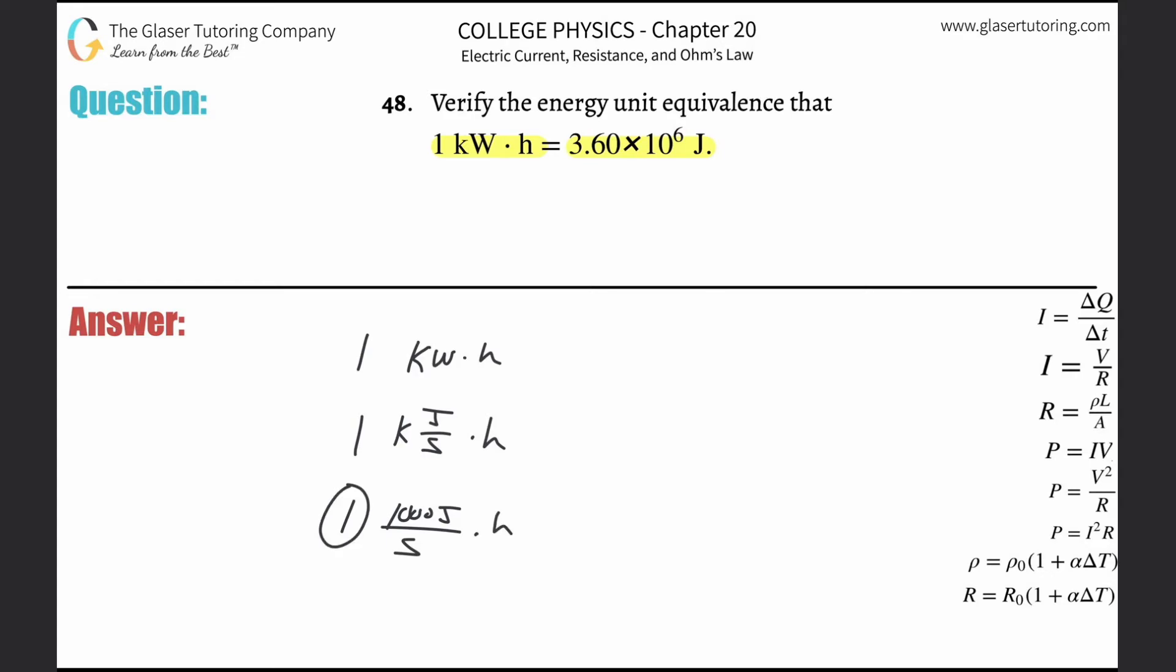So I have 1000 joule per second times hour. And now what I need to do is instead of having hour here, I have to have seconds, right? And how many seconds are there in an hour? 3600. So now what I can do is simply take the 1000 joule per second and multiply it by 3600...